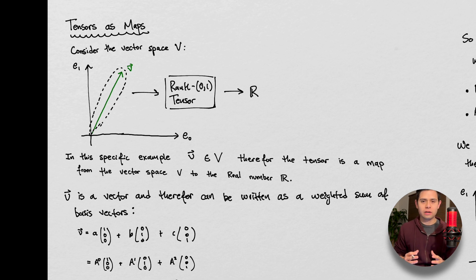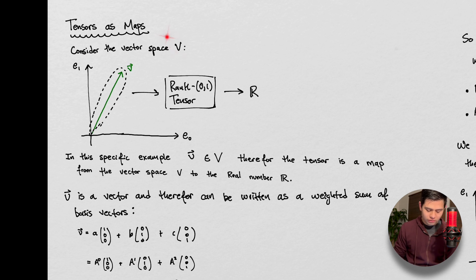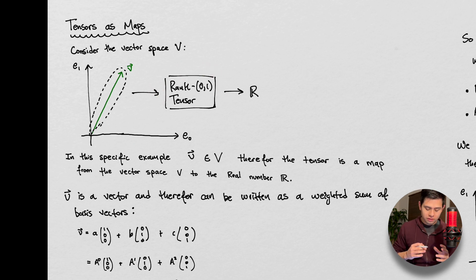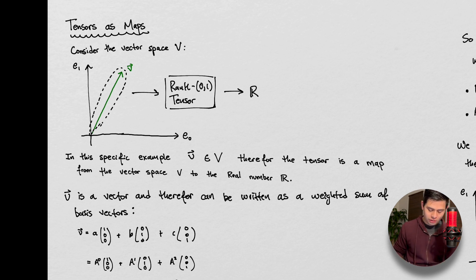Today we are looking at tensors, and we want to think about tensors as maps. We'll go through a couple of videos with this point of view in mind. We consider the vector space V — the typical vector space you're probably used to from linear algebra — and we have some arbitrary vector V in big V. The whole point of a tensor here is to take this vector and map it onto the real numbers. This machine we're calling a rank zero-one tensor will take this vector and map it to a number.